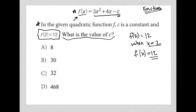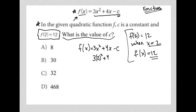So what I'm going to do is use this data. My original function says f of x equals 3x squared plus 4x minus c. I now know that when x is equal to 2, so 3 times 2 squared plus 4 times 2 minus c. When x equals 2, my f of x term — this term here — should equal 12. So I'm going to replace that with 12.